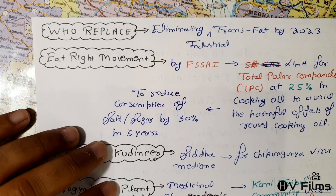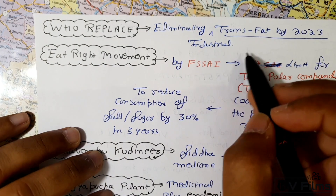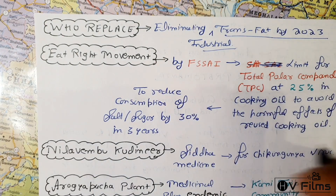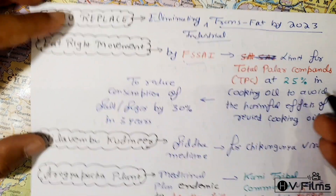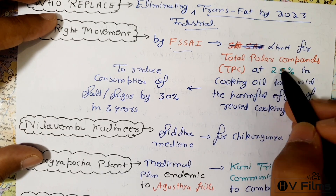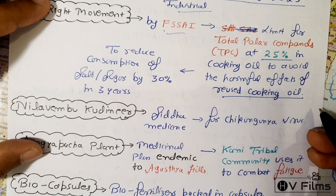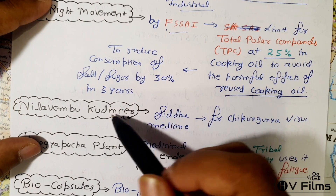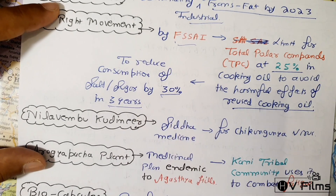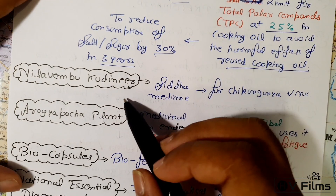The WHO REPLACE program aims to eliminate industrial trans fats by 2023. The Eat Right Movement by FSSAI aims to limit total polar compounds to 25 percent in cooking oil to avoid harmful effects of reused cooking oil, and also targets reducing consumption of salt and sugar by 30 percent over three years.